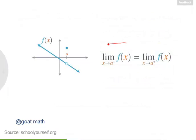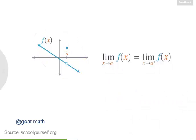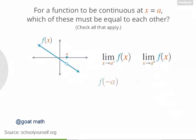Exactly, at x equals a, the left and right limits are equal, and they're both equal to the y coordinate of the hole in this function, which the function is approaching from both the left and the right sides. Now this function is almost continuous — it's just that this point is up here. If this point were down here instead, then this function would be continuous. So for a function to be continuous at x equals a, which of these expressions must be equal to each other?